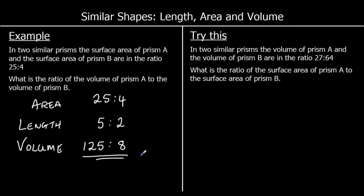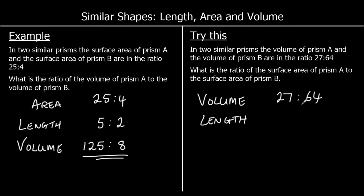In two similar prisms, the volume of A to the volume of B is in the ratio 27 to 64. We want to work out the ratio of surface area. The scale factor for volume is scale factor cubed, so to find the length scale factor we cube root. The cube root of 27 is 3, and the cube root of 64 is 4. Then to find the scale factor for area, we square the length scale factor: 3 squared is 9, and 4 squared is 16. So the area ratio is 9 to 16.